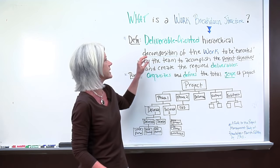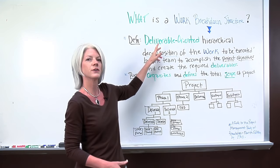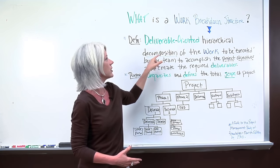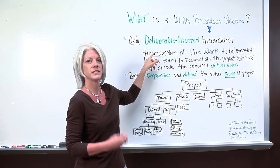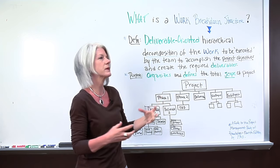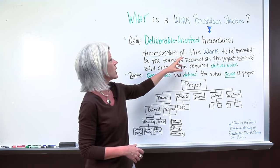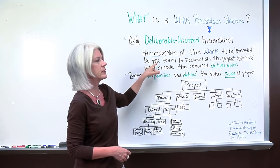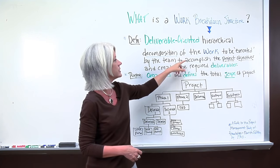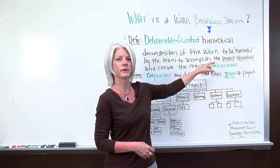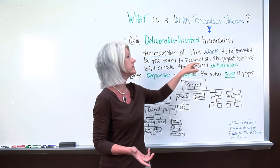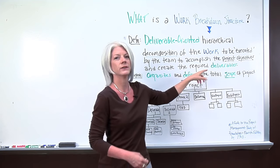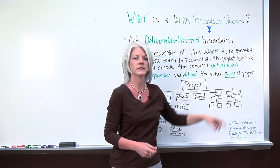A work breakdown structure is a deliverable-oriented hierarchical decomposition — so we're breaking something apart — of the work to be executed by the team to accomplish the project objectives and create the required deliverables.